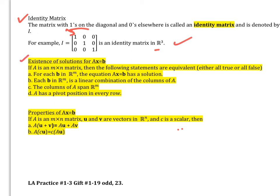Now, some other things. Existence of solutions for AX equal to B. If A is an M by N matrix, then the following statements are equivalent. So either all of these are true or all of these are false. So for each B in R^M, the equation AX equal to B has a solution. So if we have a solution, then we also know that each B in R^M is a linear combination of the columns of A. So you can write those as a combination of what we have. Then the columns of A span R^M. And we'll have to talk about that a little bit more in class. And then A has a pivot position in every row.